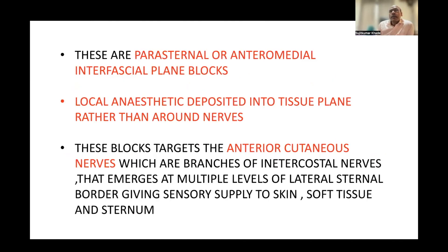These are parasternal or anteromedial interfascial plane blocks. Local anesthetic is deposited into the tissue plane rather than around nerves. These blocks target the anterior cutaneous nerves, which are branches of the intercostal nerves, that emerge at multiple levels of the lateral sternal border, giving sensory supply to the skin, soft tissue, and sternum.